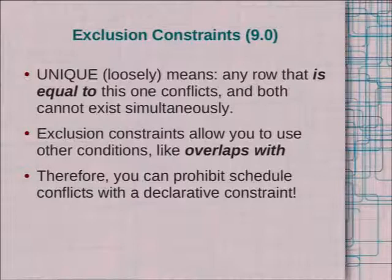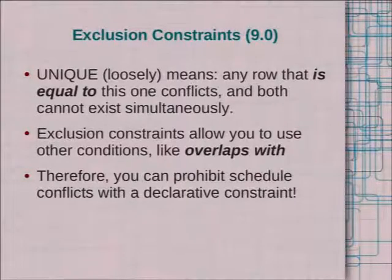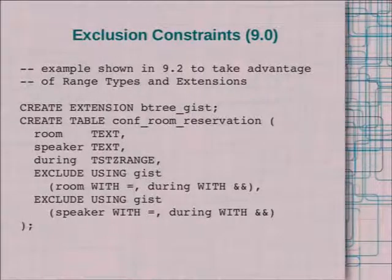Essentially, unique means that if you have one tuple with a value, there is no other tuple with an equal value for that attribute anywhere in the table — that's declarative, so the system enforces it. Exclusion constraints allow you to change that operator away from just equality to an operation that's very important for temporal: overlaps.